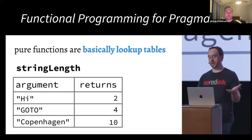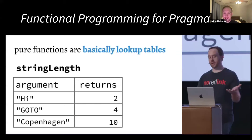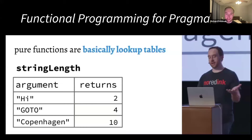I gave the example of a function called string length. You can think of it as a lookup table: give it 'hi', it returns 2, because the length is two bytes. Essentially the body of the function doesn't do anything observable — it doesn't look at or modify any outside state. It's purely a mapping from its arguments to its return value.